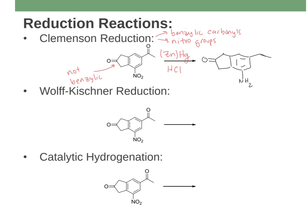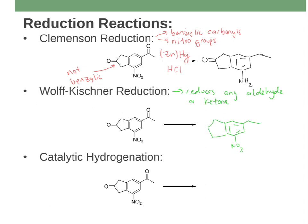The Wolff-Kishner reaction is similar but different. The Wolff-Kishner only reduces aldehydes and ketones — it reduces any aldehyde or ketone. They do not have to be benzylic. So it can reduce both benzylic and non-benzylic carbonyls, but it does not do anything to nitro groups — it leaves nitro groups alone. So if you want to reduce a carbonyl and leave the nitro group intact, pick the Wolff-Kishner.